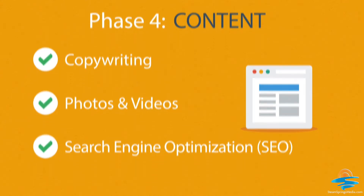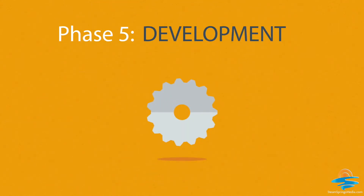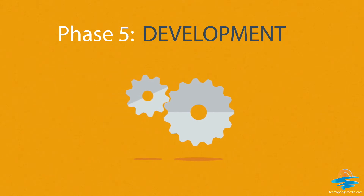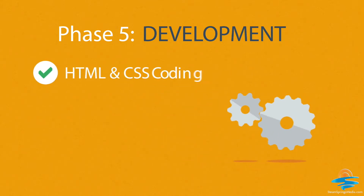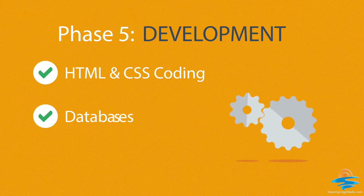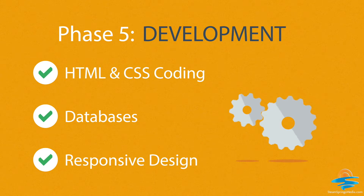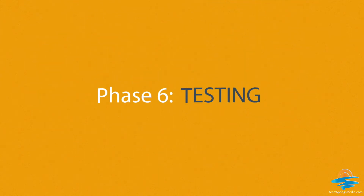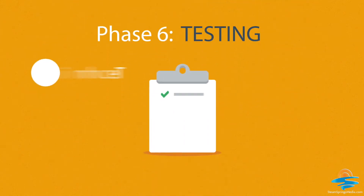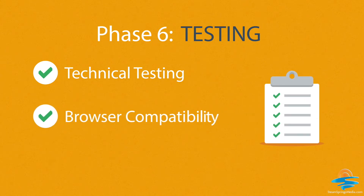Phase 5 — Development: here we actually create the website using HTML (Hypertext Markup Language) and CSS (Cascading Style Sheets), with help from databases and other technologies as well if needed. Our websites can also be made accessible to mobile devices. Phase 6 — Testing: we test all the technical features like coding, scripts, and compatibility with major browsers, and we also ask ourselves if the website truly fulfills its purpose.